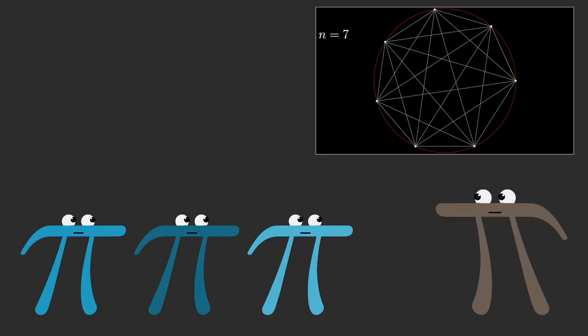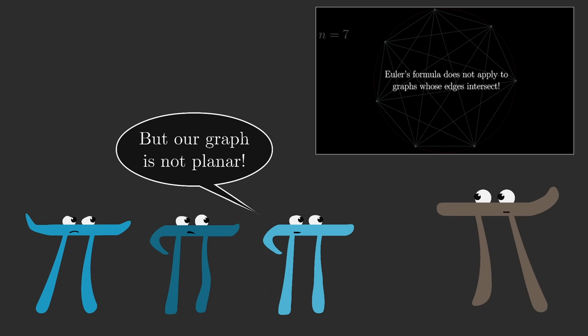And at first you might complain, but we can't use Euler's formula in this case, because it only applies to planar graphs. And in our case, the lines absolutely intersect with each other. We even counted how many times they intersect with each other.